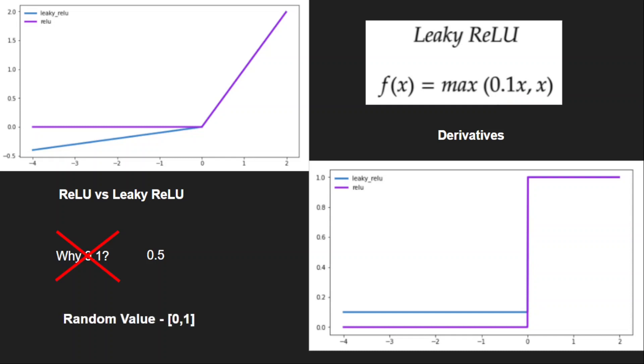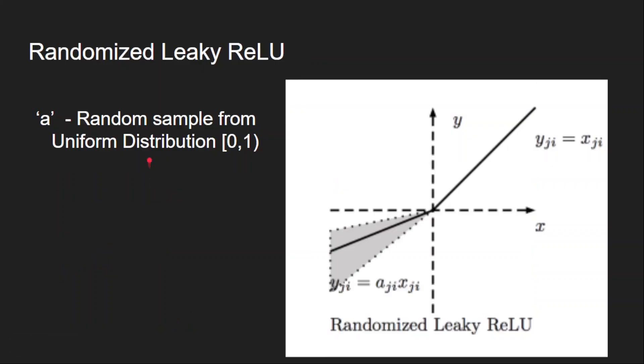Okay, what if we take some random value within the range of 0 and 1 instead of using one fixed value like 0.1 or 0.5? We will take random values between 0 and 1 for different training steps. So throughout the training we use different values between 0 and 1 and this idea led to randomized Leaky ReLU. So here A is not a fixed value. A is a random sample from the uniform distribution and the range is from 0 to 1.